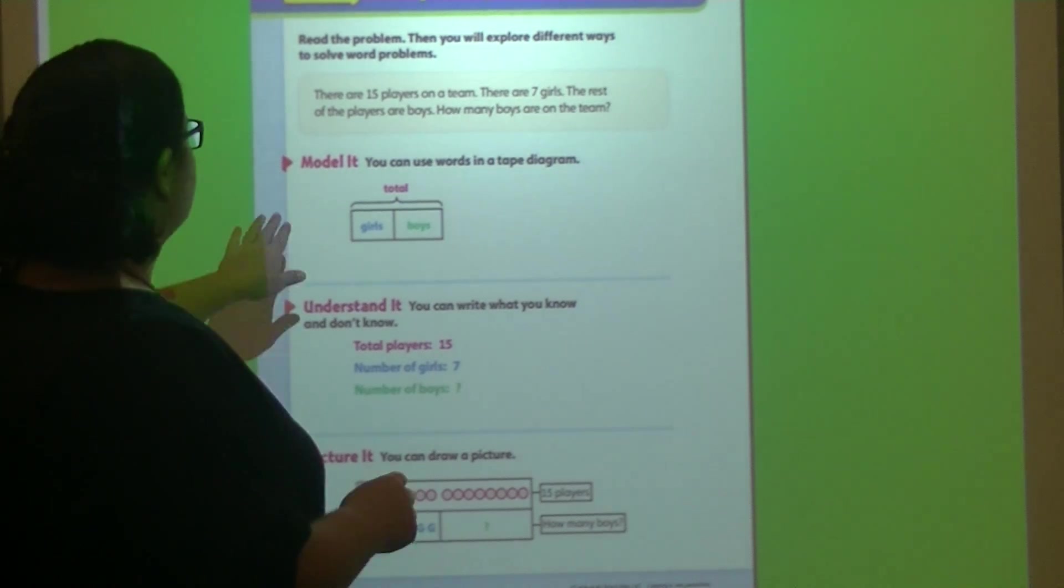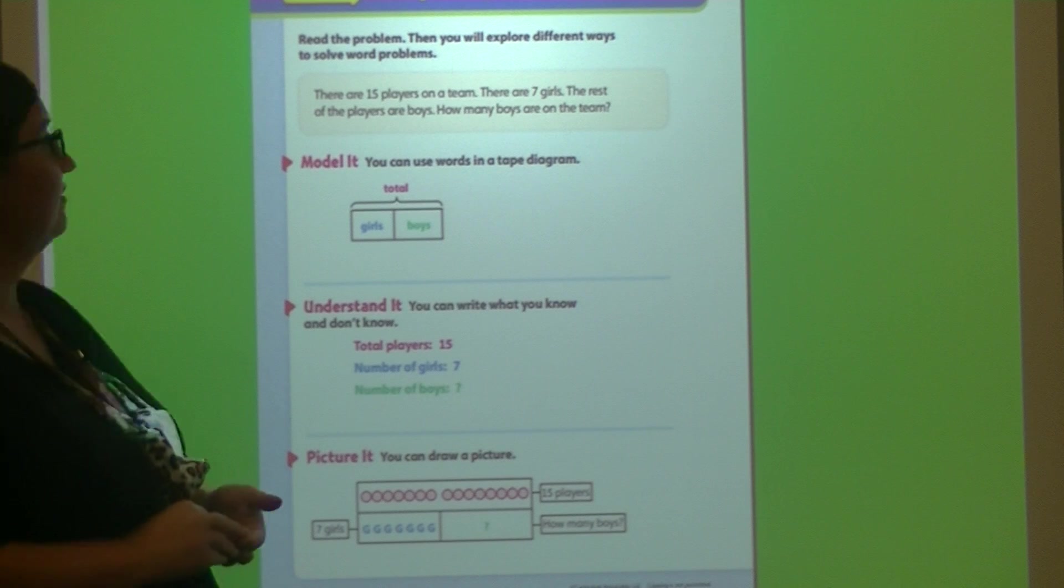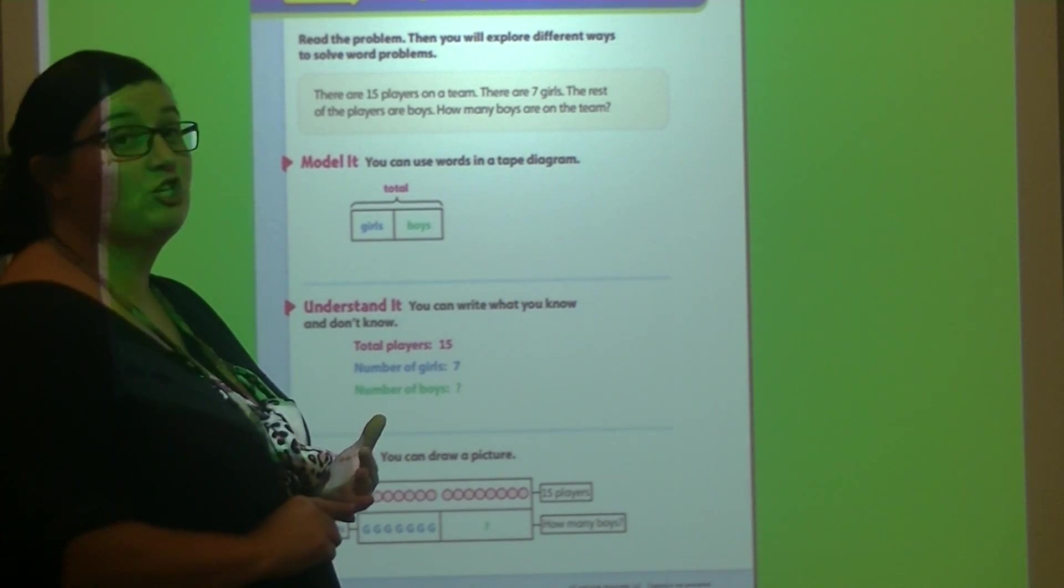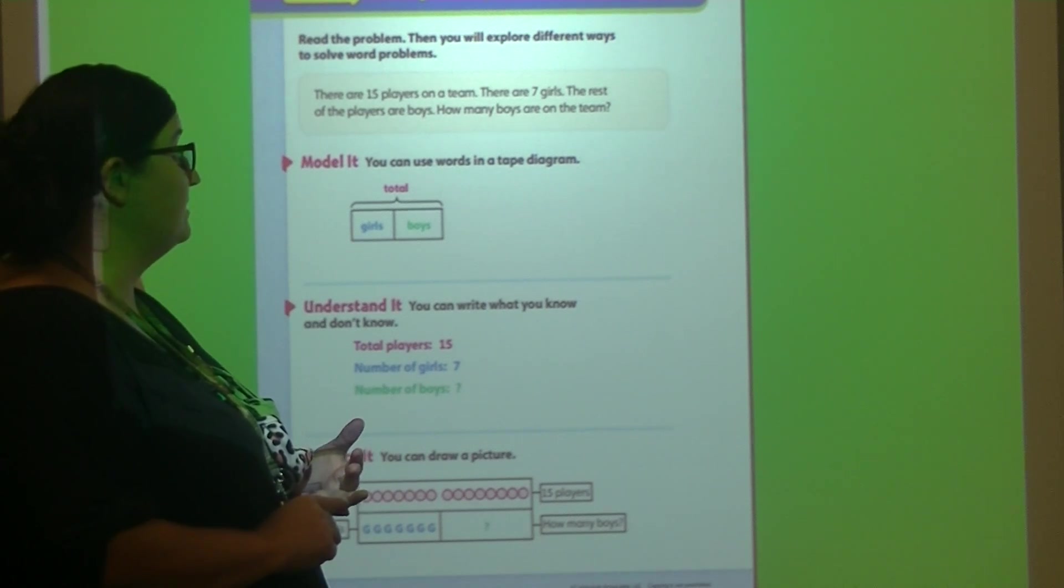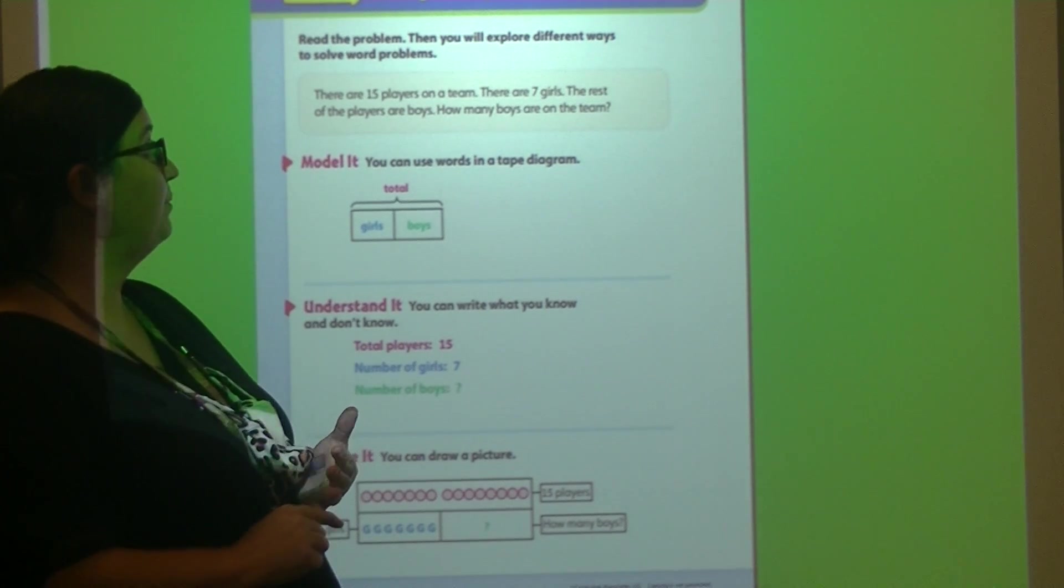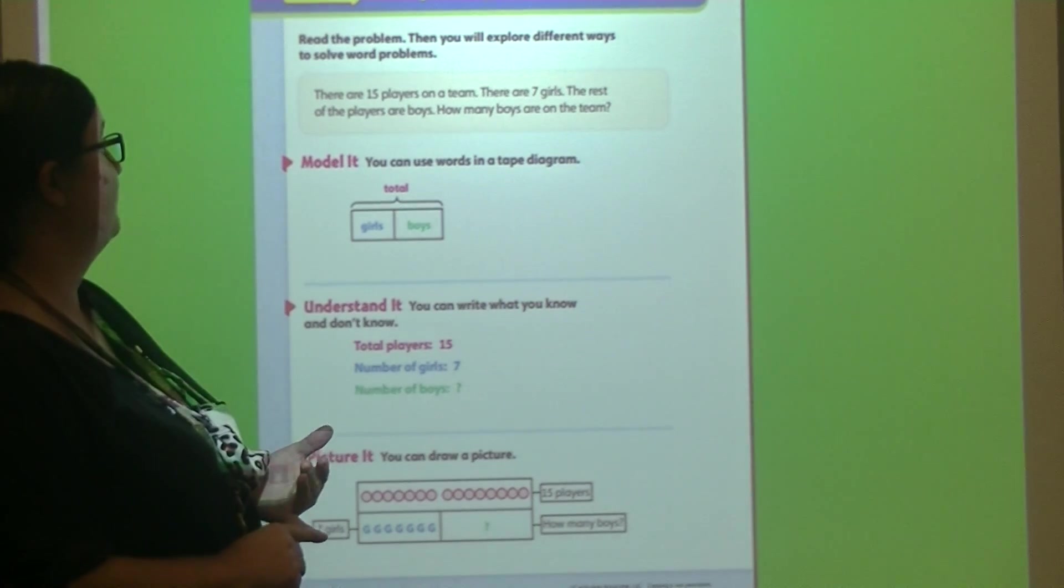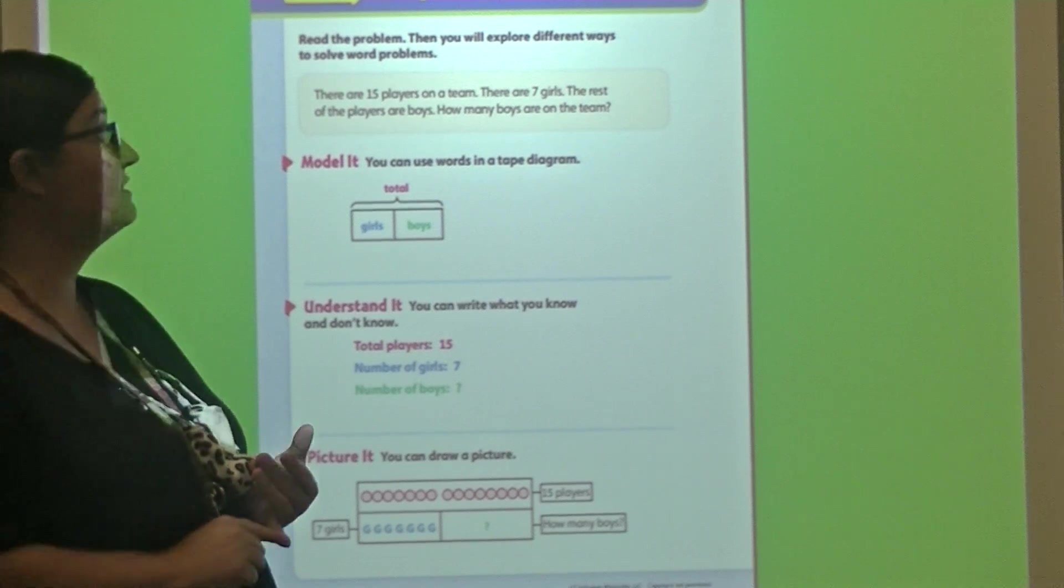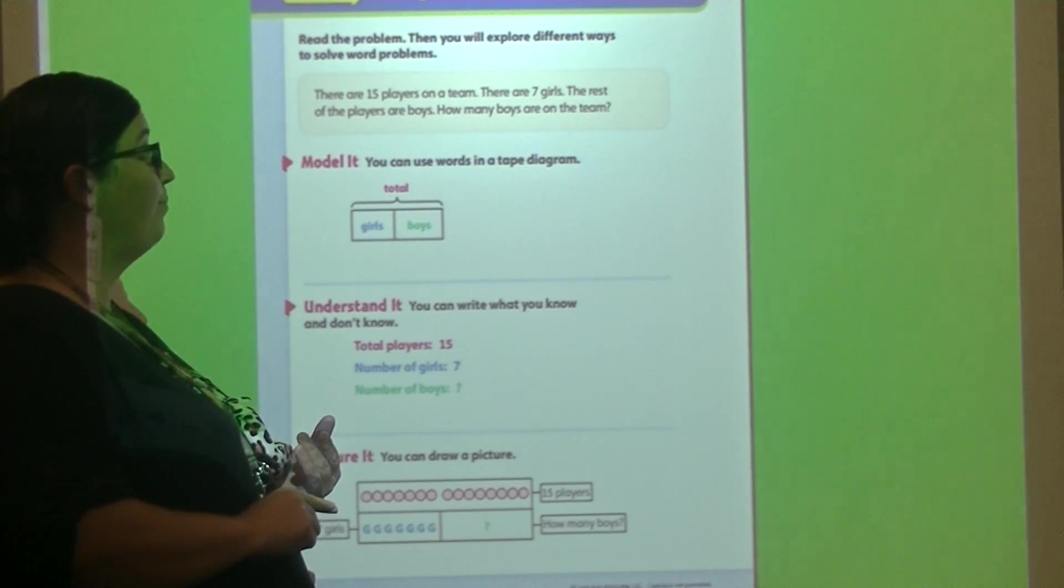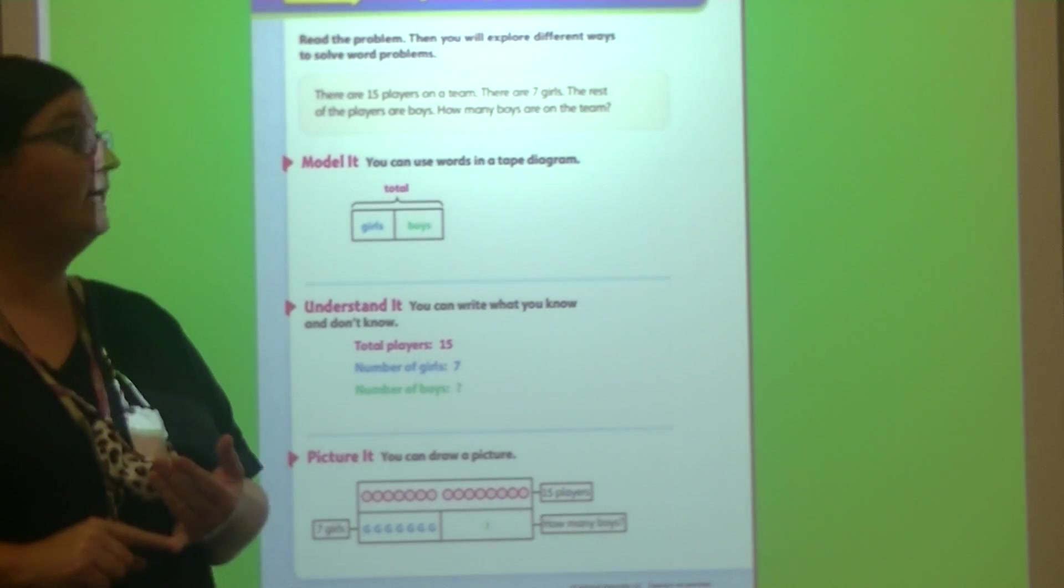Alright, so let's look at our problem. There are 15 players on a team. There are 7 girls. The rest of the players are boys. How many boys are on the team? One more time. There are 15 players on a team. There are 7 girls. The rest of the players are boys. How many boys are on the team?